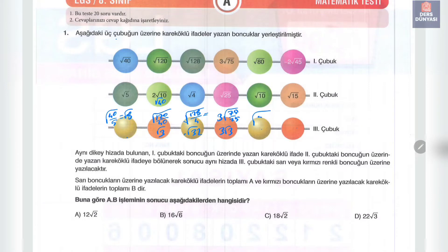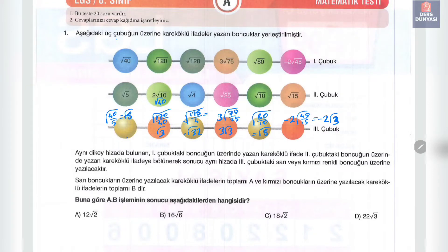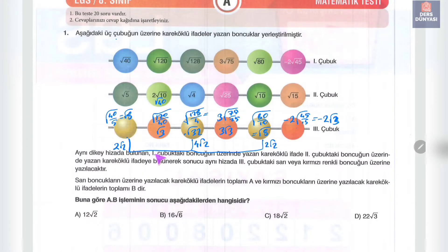80 bölü 10'dan kök 8 eşittir. Eksi 2 kök içerisinde 45 bölü 15'ten eksi 2 kök 3 şeklinde söyleyebiliriz. Sarıları kendi aralarında toplayacağız. Buradaki ifade 2 kök 2, 4 kök 2, 2 kök 2. Toplamda 8 kök 2 eşittir.